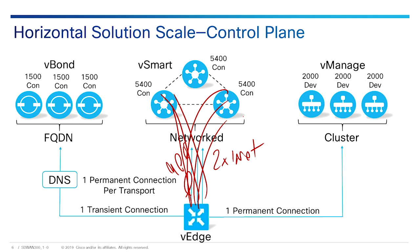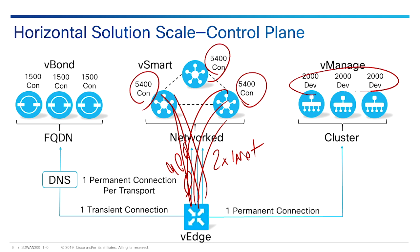The vSmart connections scale to 5,400 connections, and each vManage cluster instance supports up to 2,000 devices. Each vSmart has its own IP address and the balancing is done automatically by the solution — it's going to load balance stuff automatically.